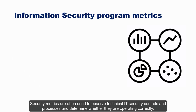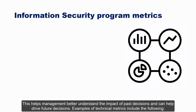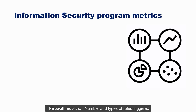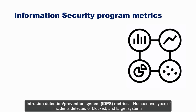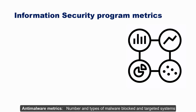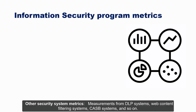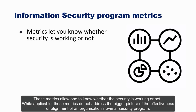Security metrics are often used to observe technical IT security controls and processes and determine whether they are operating correctly. This helps management better understand the impact of past decisions and can help drive future decisions. Examples of technical metrics include firewall metrics such as number and types of rules triggered; IDPS metrics such as number and types of incidents detected or blocked and target systems; anti-malware metrics such as number and types of malware blocked; and other security system metrics from DLP systems, web content filtering systems, and CASB systems.